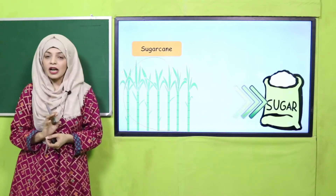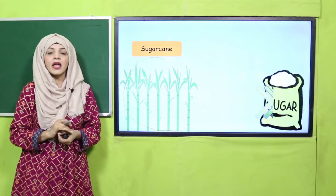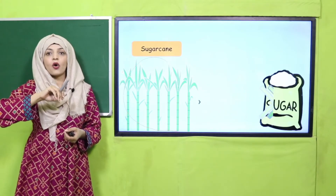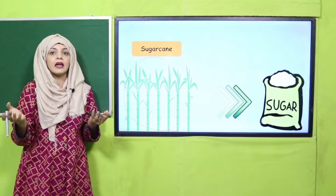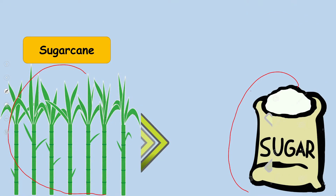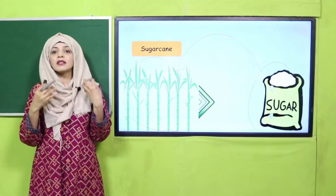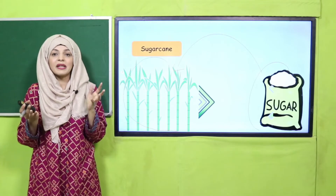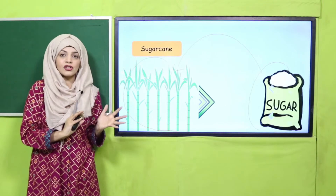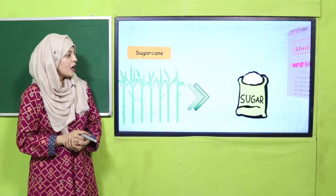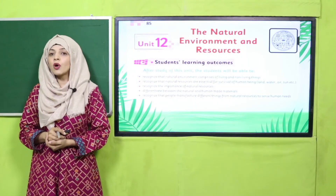Sugar cane — ganne — is natural. The sugar that you eat or put inside your tea or any sweet thing comes from the sugar cane; it is made from sugar cane. So that means we make different man-made materials from natural things to fulfill our needs.